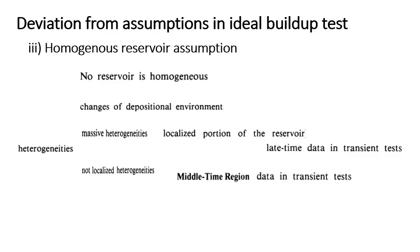When massive heterogeneity is there, or in a localized portion of the reservoir, it would behave like a boundary of the reservoir, and that will be reflected in the late time region of the transient test data. When distributed heterogeneity is there, it will be averaged out in the middle time region of the transient test data.